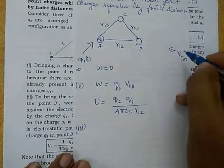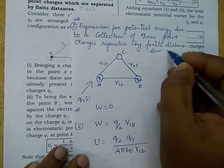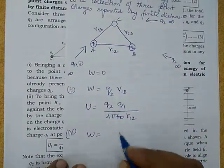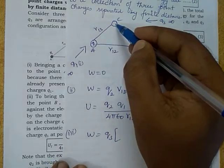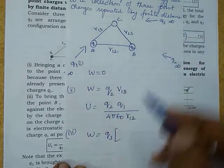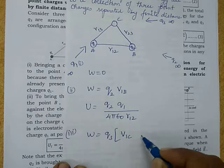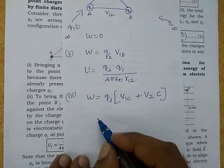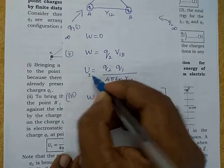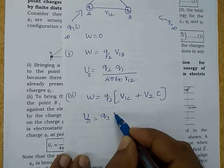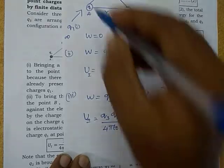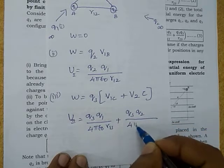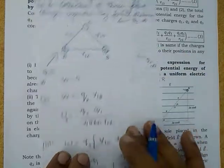The next step: q2 is fixed. I am moving the charge q3 from infinity. For that, we need to apply some work. That work done is equal to q3. At point C there will be two potentials — potential due to the charge q1, that is V1C, and potential due to the charge q2, that is V2C. Then solving this, we get the energy U2 equal to q3 q1 over 4π epsilon-0 times r13, plus q3 q2 over 4π epsilon-0 times r23. This is the potential energy.